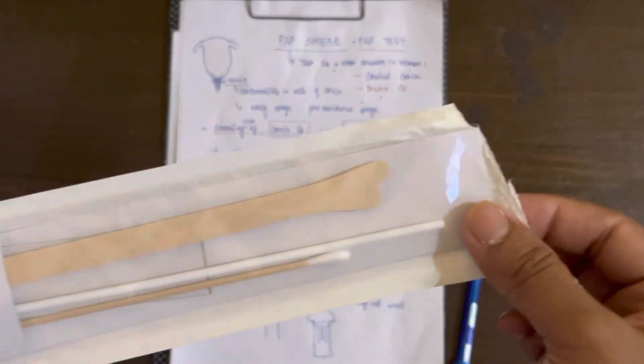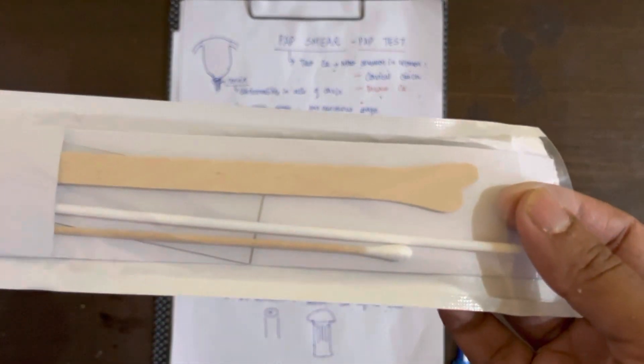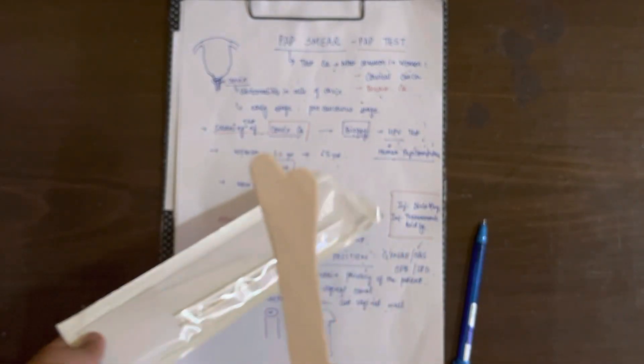This is a sterile Pap kit, but in the last video I had used it so it's open. Here you will be getting three or four things. First one is the IRS spatula.